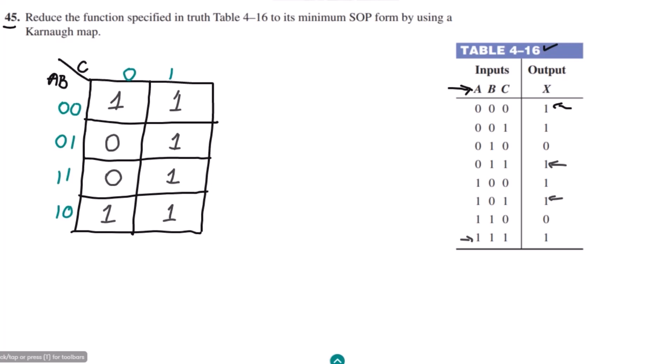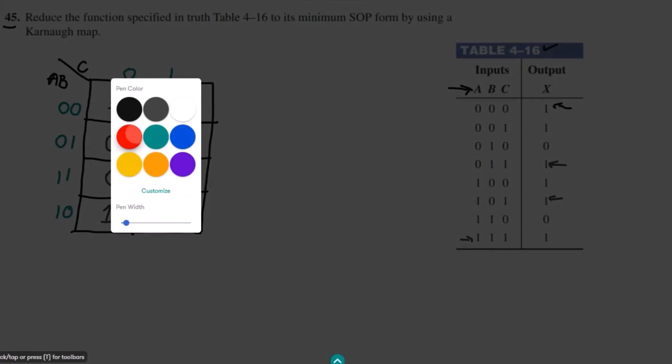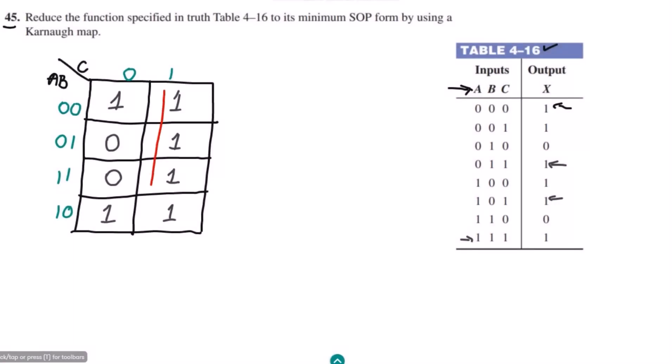Now we have found this Karnaugh map, so in order to reduce the terms here we can very easily see that these are the terms which can be combined in the form of 1s. Here the only constant term is this C, so here this constant is C.